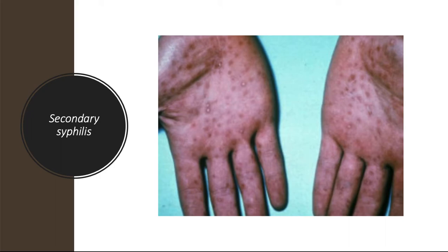Secondary syphilis becomes generalized. It is characterized by rash and systemic symptoms, during which the patient is very infectious. If the patient is untreated, the symptoms will eventually resolve over a number of weeks, but they can recur. Untreated, 25% of patients develop secondary syphilis within 3 months after the initial chancre.